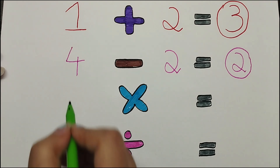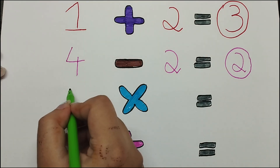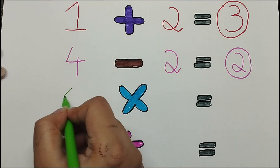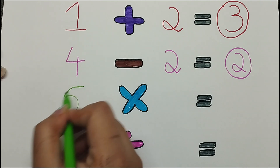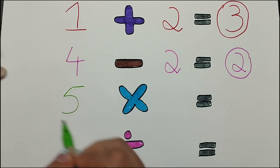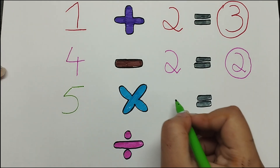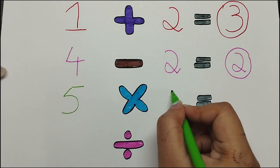Now multiplication. 5 multiply by 2 is equals to 10.